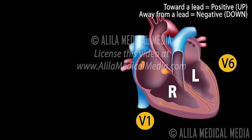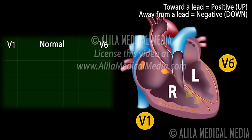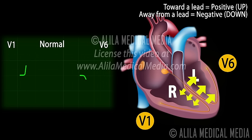Activation of the ventricle starts with the interventricular septum. In normal conduction, depolarization of the septum is initiated from the left bundle going to the right, toward V1 and away from V6. This results in a small positive deflection in V1 and a negative deflection in V6. The signals then move in both directions to the two ventricles, but as the left ventricle is usually much larger, the net movement is to the left, away from V1 and toward V6.